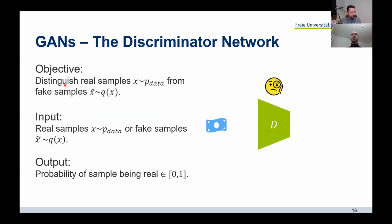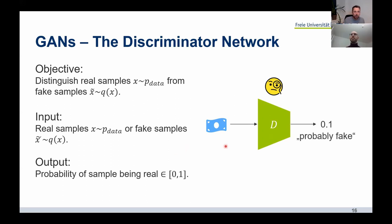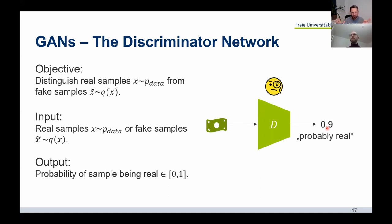More formally: the discriminator gets samples from either the real data distribution or the generator's distribution, and its objective is to distinguish real samples from fake samples. In the original formulation, it outputs a scalar between zero and one — one meaning this is a real sample, zero meaning this is fake. Values like 0.1 probably mean fake and 0.9 probably mean real.